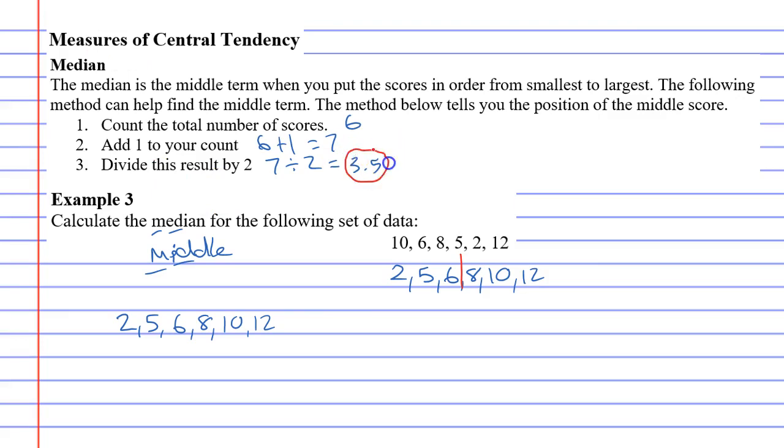the 3.5 tells you where the middle is. And you do it by counting 3.5 from the left. So 1, 2, 3. So the 6 is the third number.